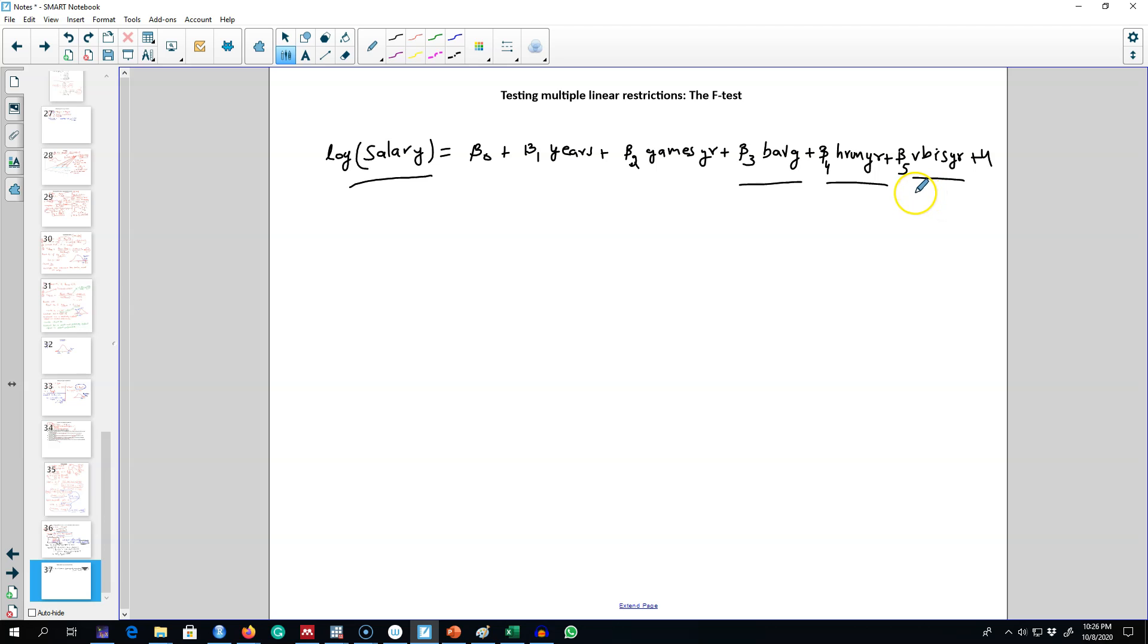Our hypothesis is that once years in the league and games per year have been controlled for, the statistics measuring performance—that is batting average, home runs, and runs batted in per year—these three variables have no impact on salaries.